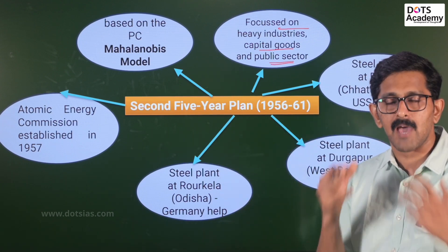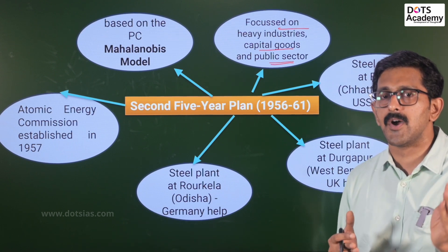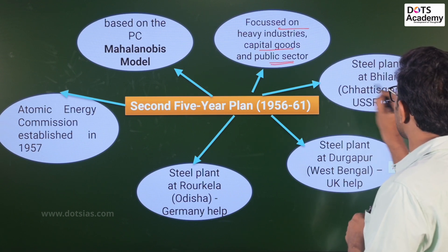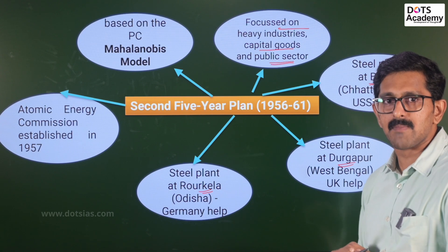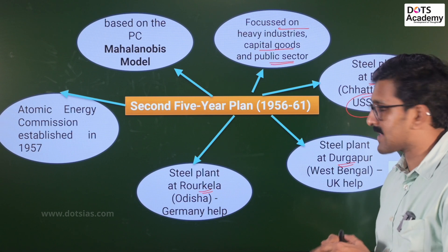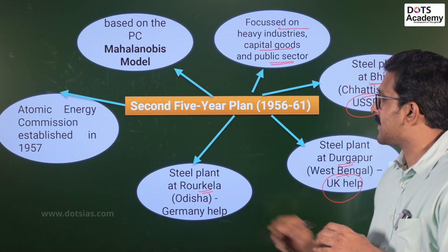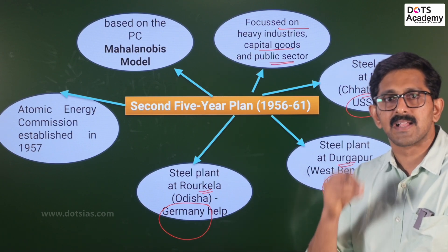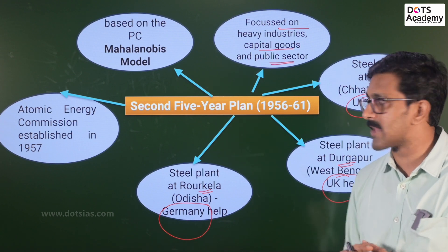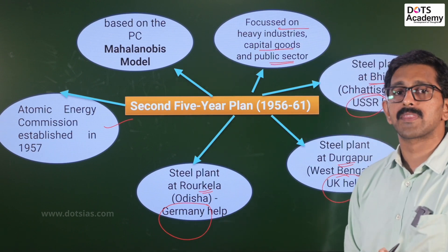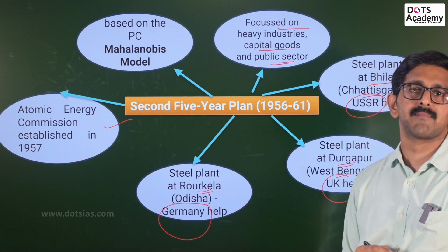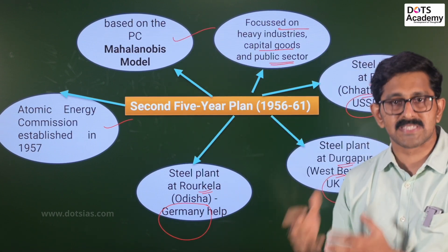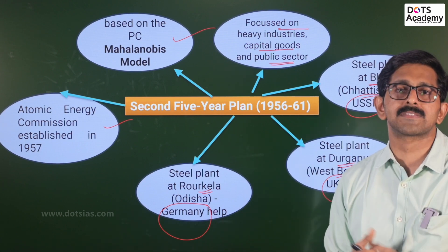The second five-year plan focused on the overall development of capital goods and heavy industries. In 1957, the second five-year plan was designed by PC Mahalanobis. It is called the Mahalanobis Model. The first five-year plan used the Harrod-Domar Model; the second five-year plan used the PC Mahalanobis Model.